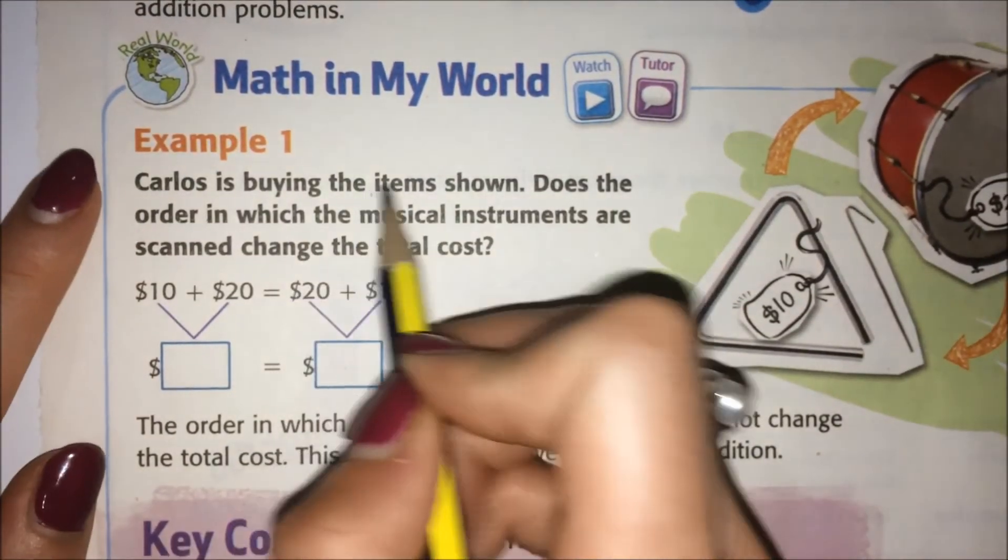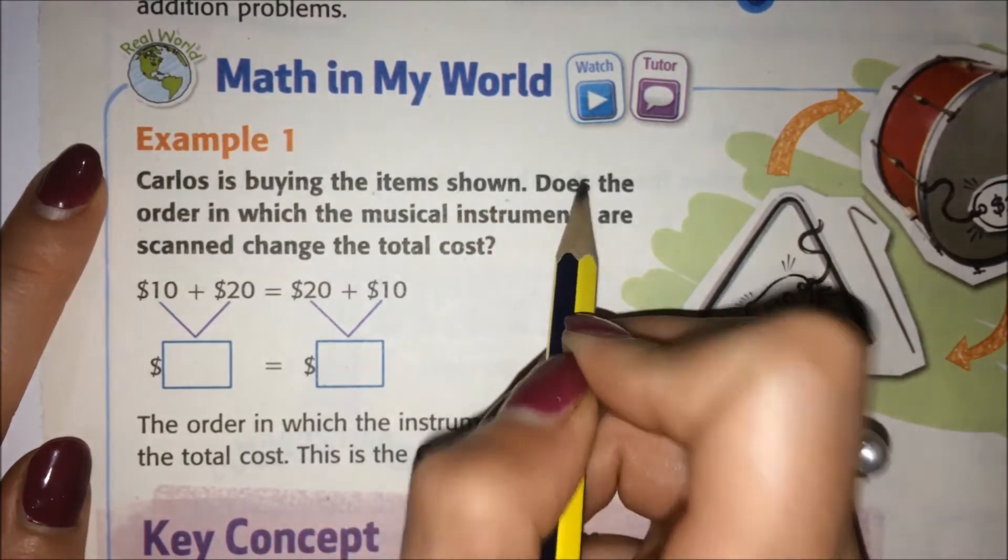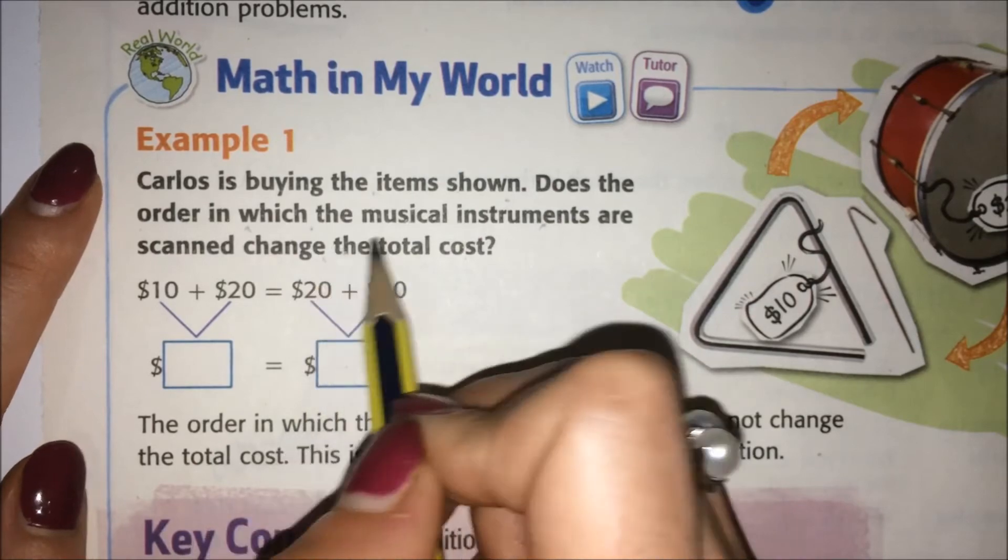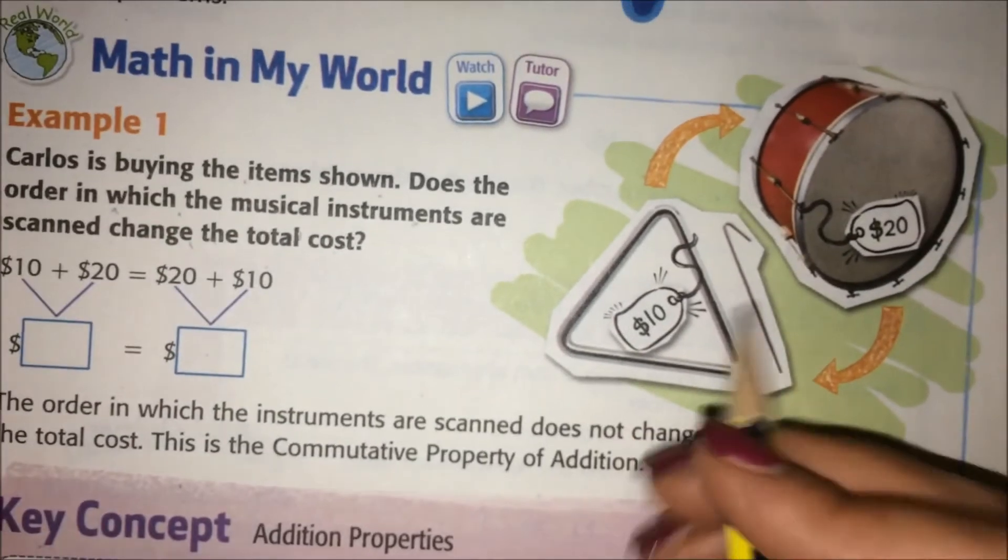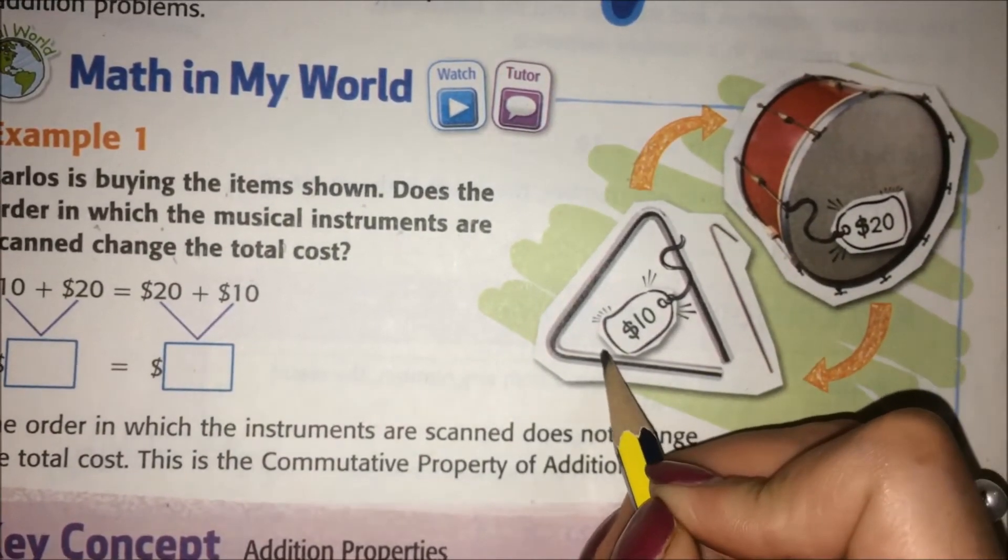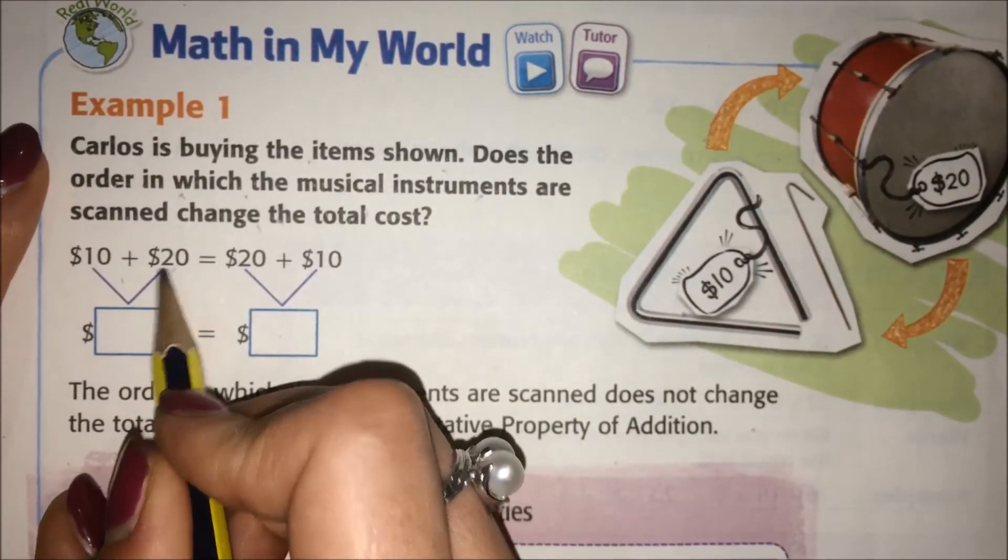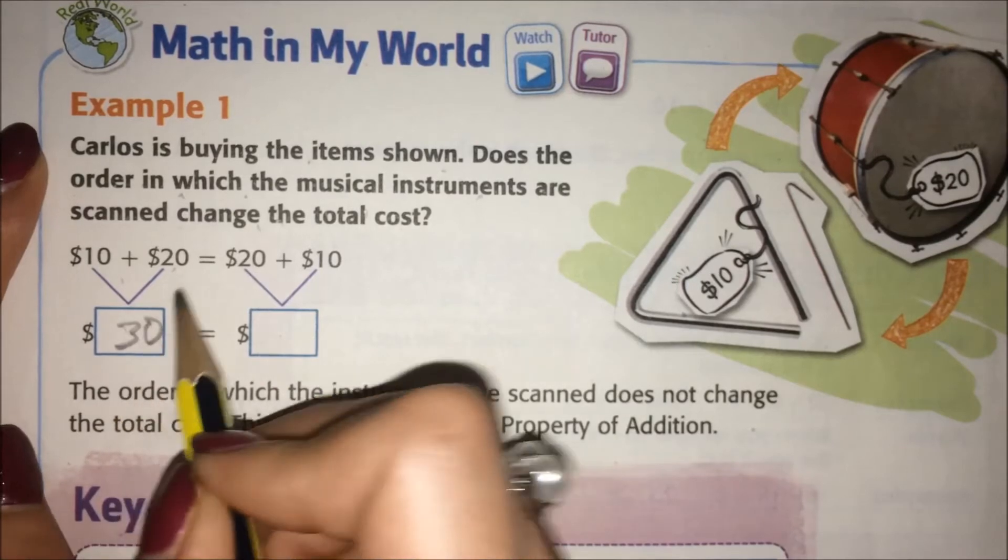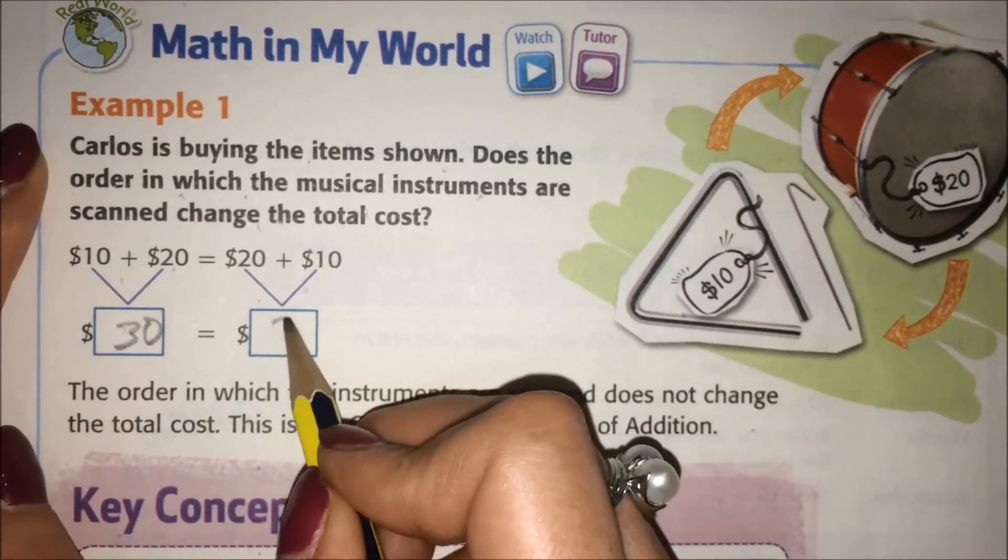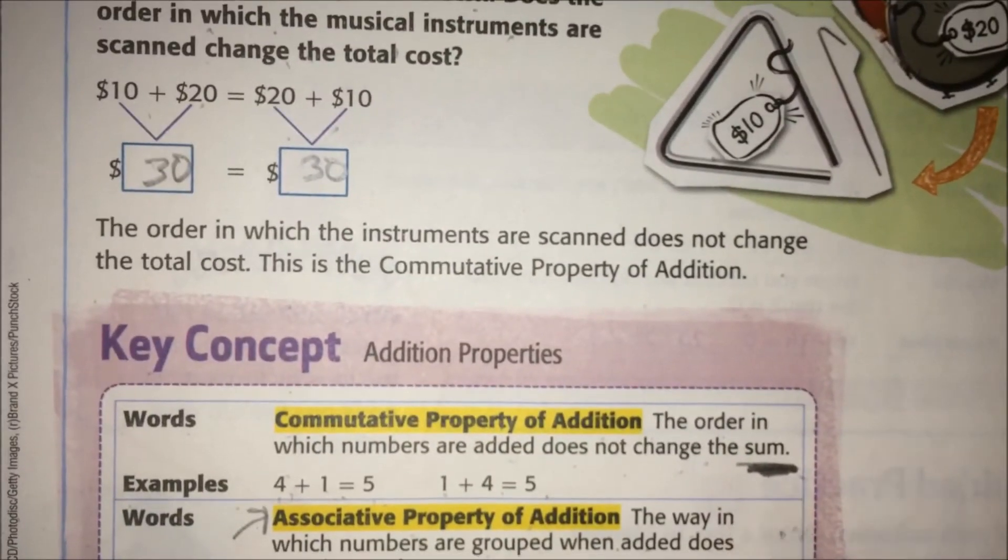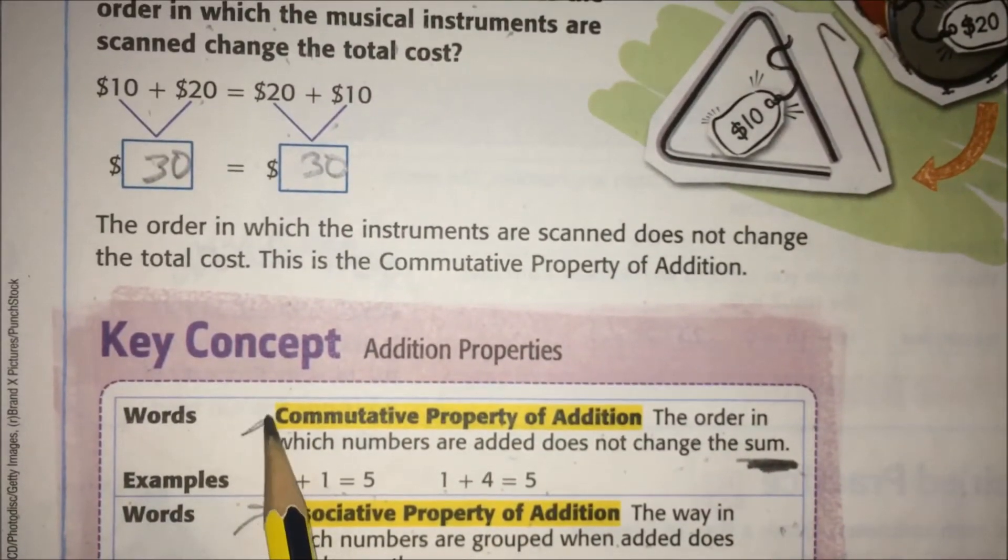Carlos is buying the items shown. Does the order in which the musical instruments are scanned change the total cost? So does it matter if at the store we add ten first or twenty first? Well, if we do ten first and then twenty first, we get thirty. If we have twenty and then ten, we still get thirty. So no, it does not matter.